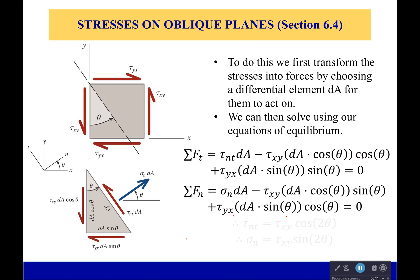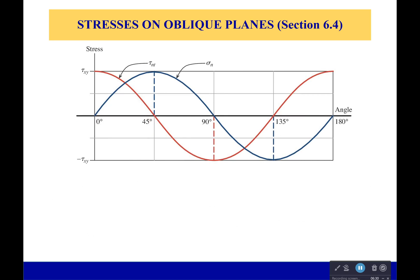Now if we solve this what we get is that our shear stress on that new normal tangential plane is going to be equal to our original shear stress times cos(2θ). And our normal stress is going to be equal to our original shear stress times sin(2θ). And this actually brings us to a very interesting realization.